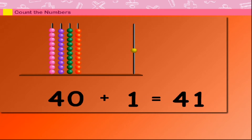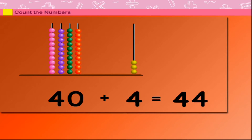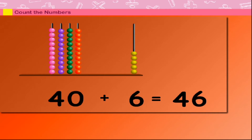40 plus 1 is equal to 41. 40 plus 2 is equal to 42. 40 plus 3 is equal to 43. 40 plus 4 is equal to 44. 40 plus 5 is equal to 45.